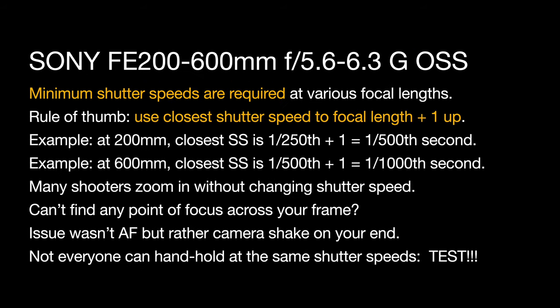Minimum shutter speeds are required at various focal lengths, no matter what you're doing. When you're shooting super telephotos, it's really important to pay attention to this. As a rule of thumb, use the closest shutter speed to the focal length you're at, and then add one up. For example, this lens at 200mm — the closest shutter speed is 1/250th of a second. If you add one shutter speed going up higher, 1/500th of a second would be the lowest shutter speed you'd want to hand-hold at 200mm.